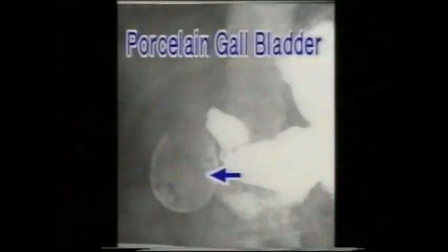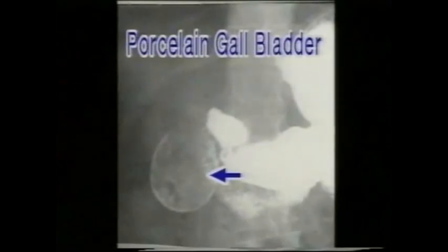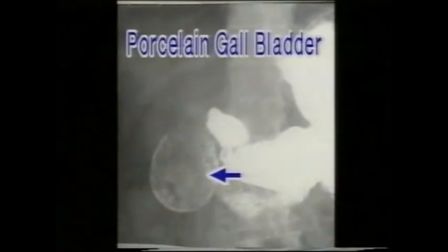Rarely, the wall of the gallbladder may get calcified and the faint radio-opaque shadow of the gallbladder may be seen on plain X-ray, termed as a porcelain gallbladder.